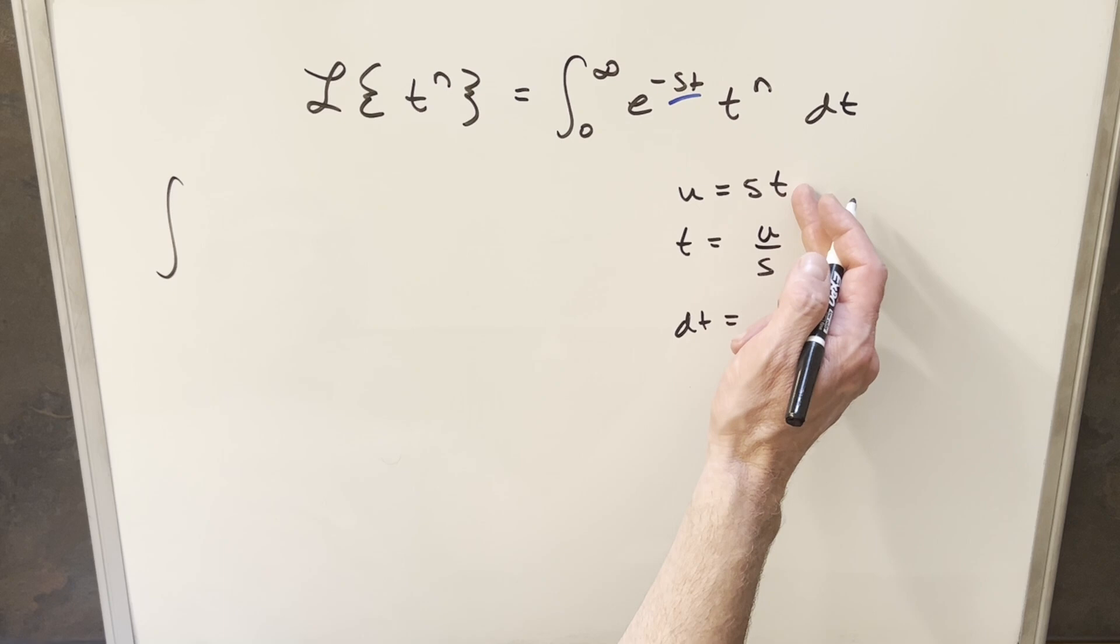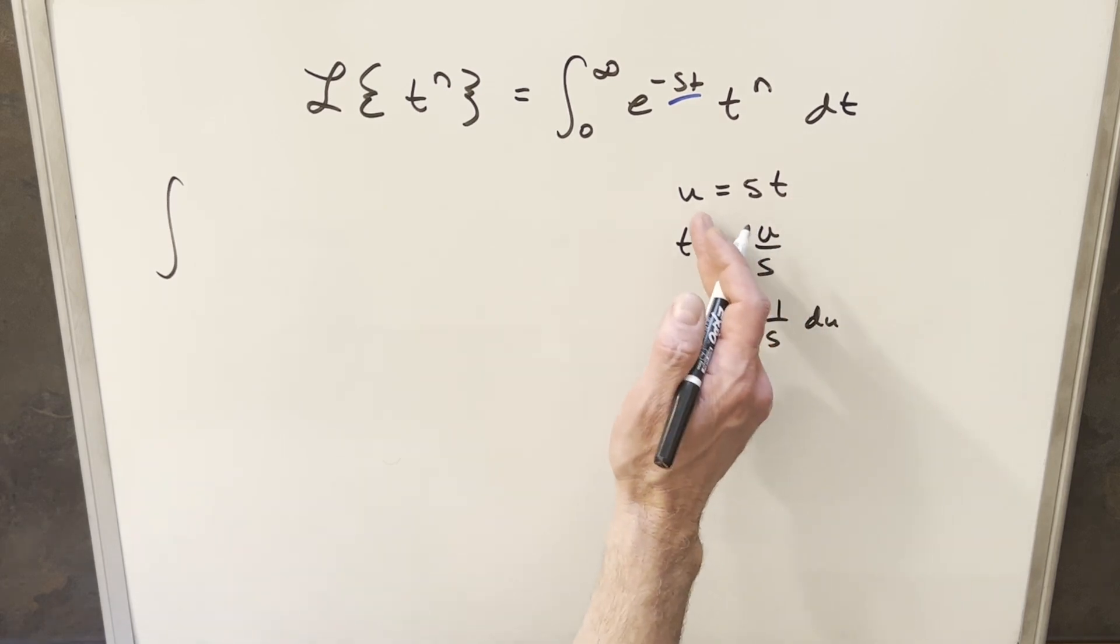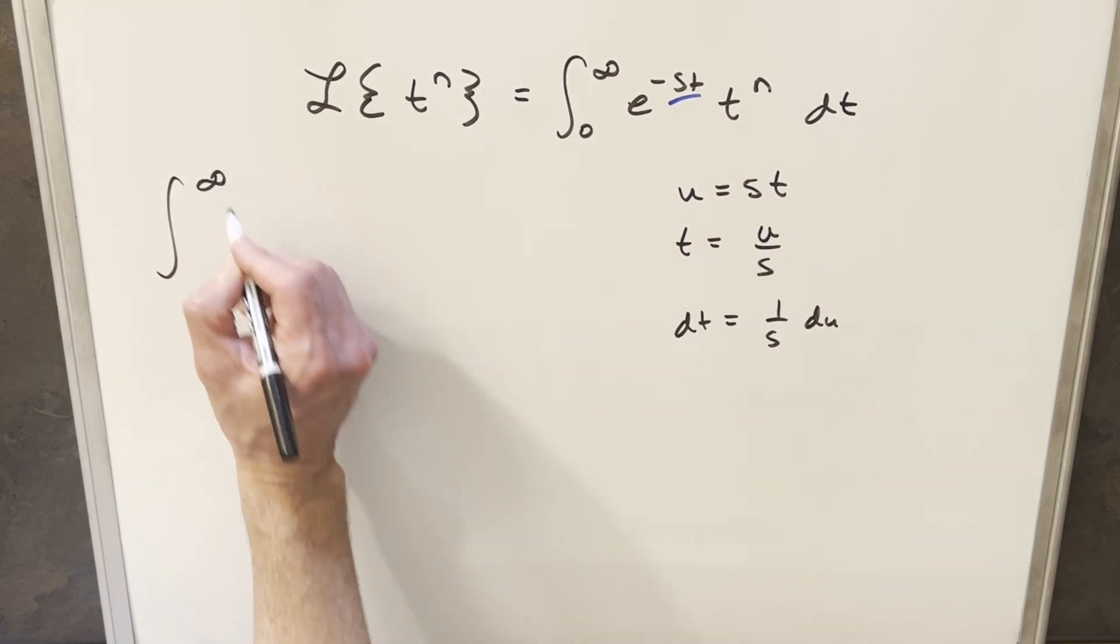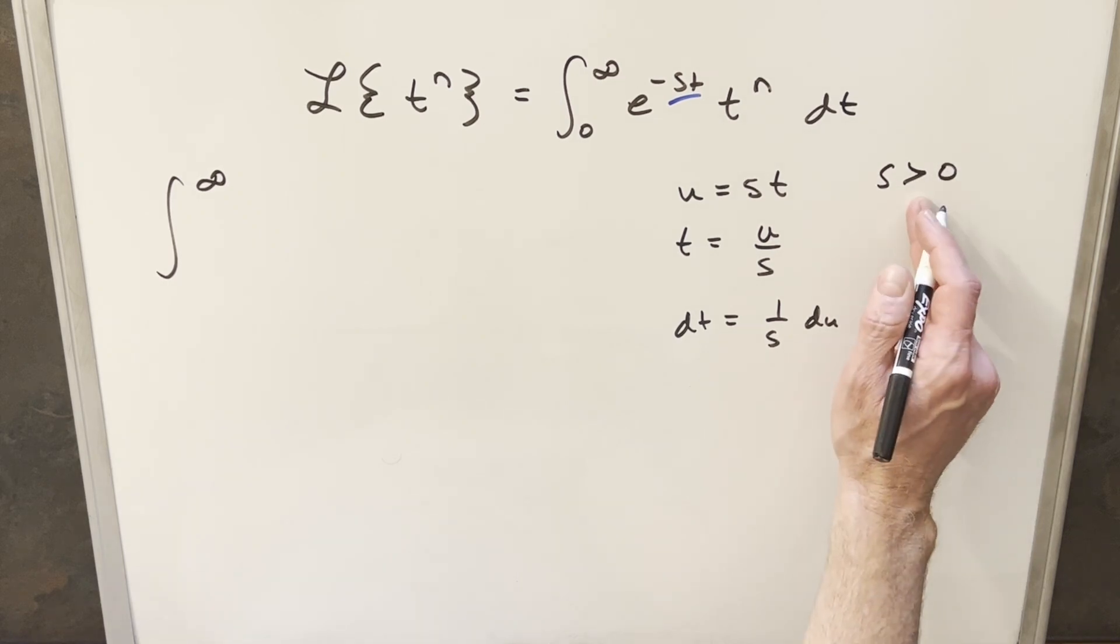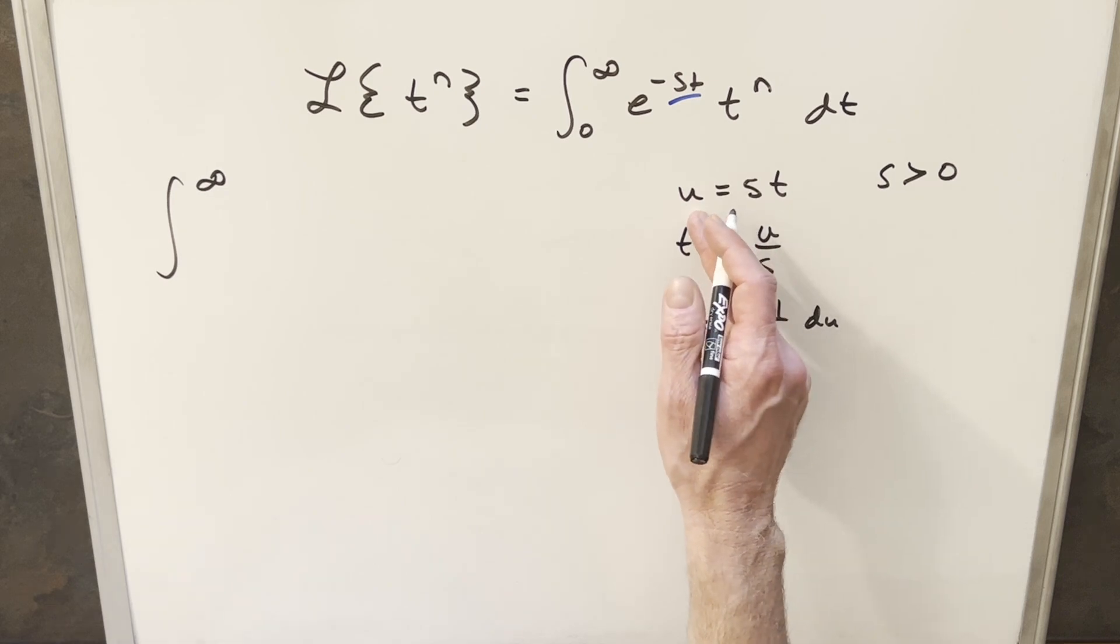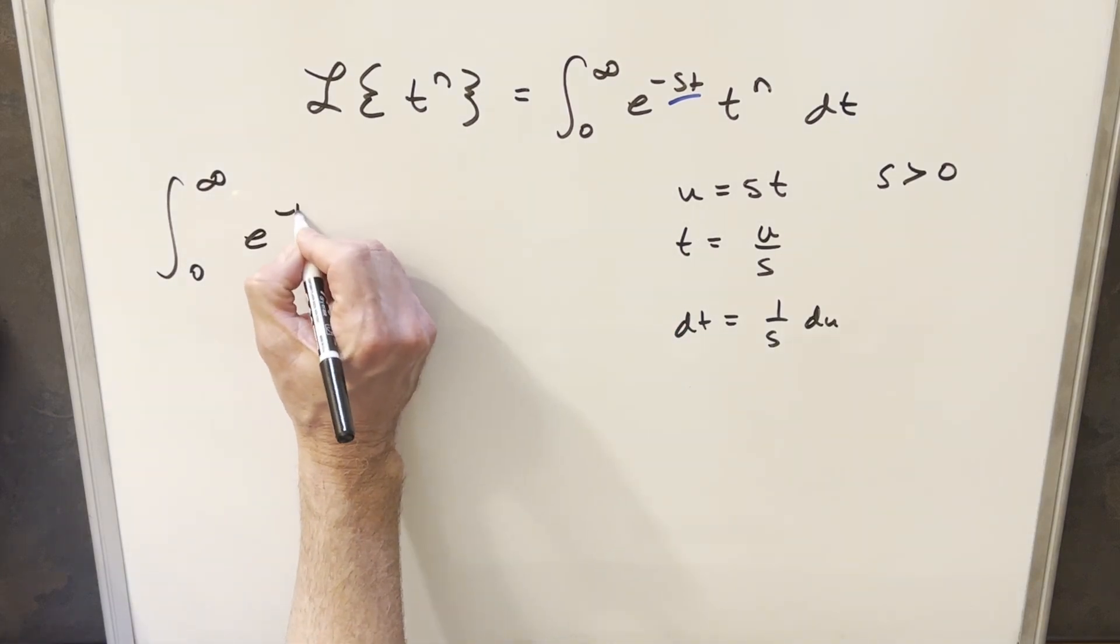And so now we'll go ahead with this substitution. First we look at what happens at infinity here, if we have an infinity for our t value. Well, u is still going to be infinity as long as s is positive, so we'll set this to infinity, but I'm going to put the condition s has to be greater than zero, otherwise if s is less than zero, then this would go to minus infinity. Then pulling in zero for t, we just get zero for the lower bound.